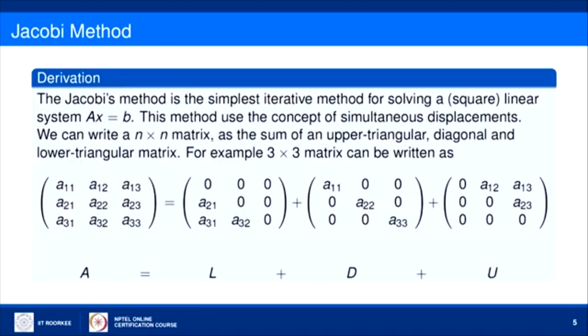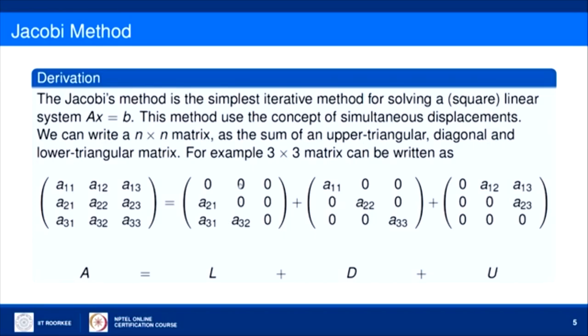First we will consider the Jacobi method, which is the simplest iterative method for solving a square linear system A X equals B. This method uses the concept of simultaneous displacement. We can write an N by N matrix A as the sum of a lower triangular matrix L, a diagonal matrix D, and an upper triangular matrix U.